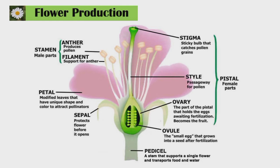The female organ is called the pistil or carpel. It consists of the stigma, style, ovary, and ovule. The stigma is a sticky surface that catches pollen grains. The style is the passageway for pollen grains. The ovary holds the eggs awaiting fertilization and becomes the fruit, while the ovule is the small egg that grows into a seed after fertilization.